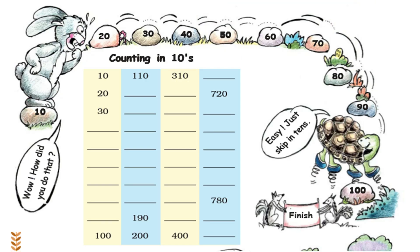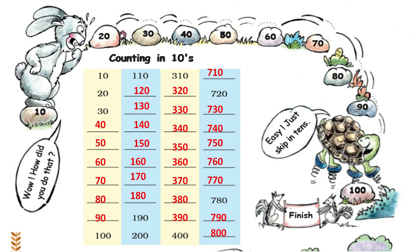Now let us count in tens: 10, 20, 30, 40, 50, 60, 70, 80, 90, 100, 110, 120, 130, 140, 150, 160, 170, 180, 190, 200. You can count numbers in tens like this.